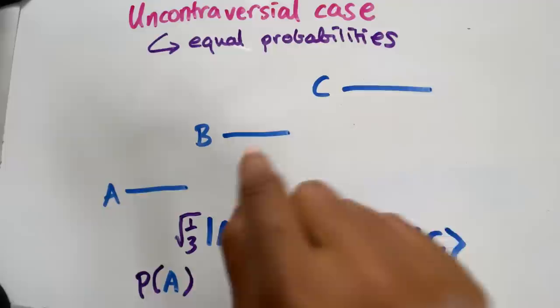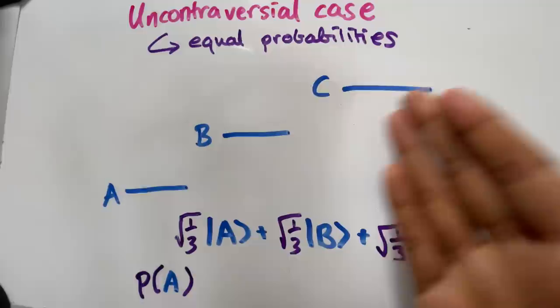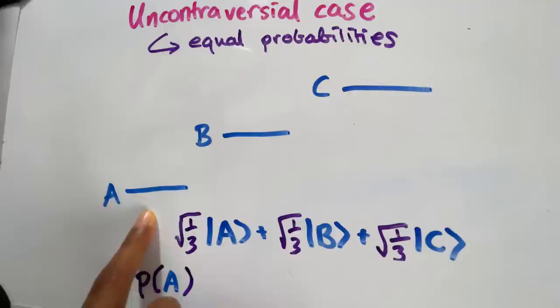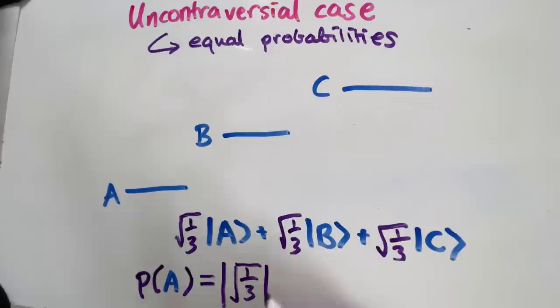So what does the Born rule tell us in this case? Well, you have these options A, B, and C. And if you were to measure the energy, you would get one of those with some probability. The Born rule says that you take the coefficient in front of A, so that is the square root of one third, and you take the modulus square of it. You may as well just think of this as squaring, which is the same as one third. And so that's the probability.